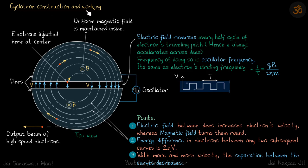Cyclotron construction and working. A cyclotron is a device used to accelerate charged particles, in this case electrons. It has two semicircular halves, both with uniform magnetic field inside them. In between the two halves there is a gap where you apply some potential difference that is used to increase the velocity of electrons.